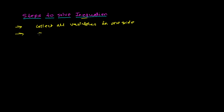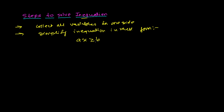The second rule is to simplify the inequation into a standard form. We're talking about linear inequations, so it may be: AX ≥ B, or AX > B, or AX ≤ B, or AX < B. We need to convert it into one of these four forms.